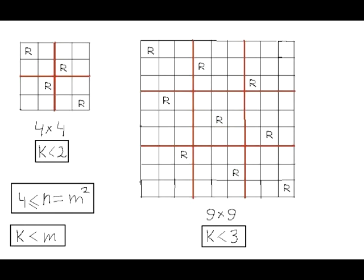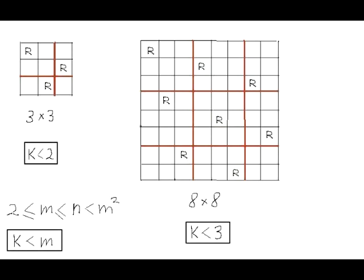In other words, that integer k in the question is strictly less than m. And of course, if n is less than m squared but not less than m, then we can construct the partial regular grid consisting of m by m square regions, which still doesn't leave any room for a single m by m square region that would not contain any rooks.